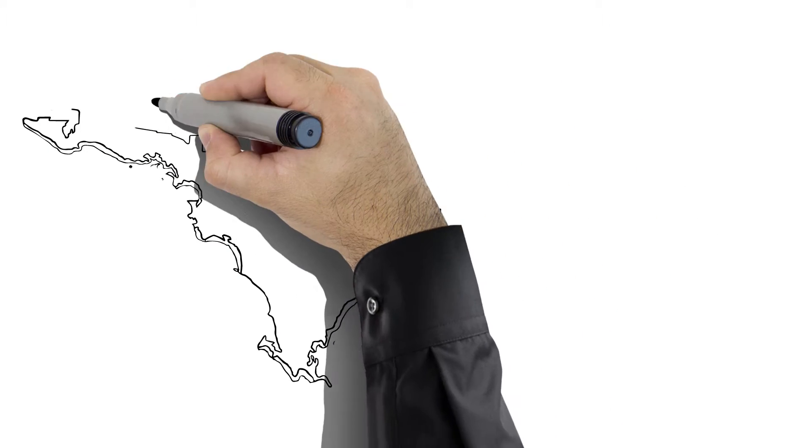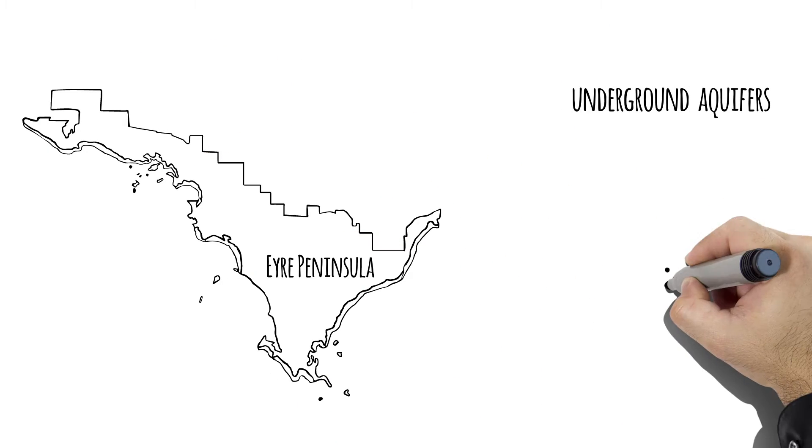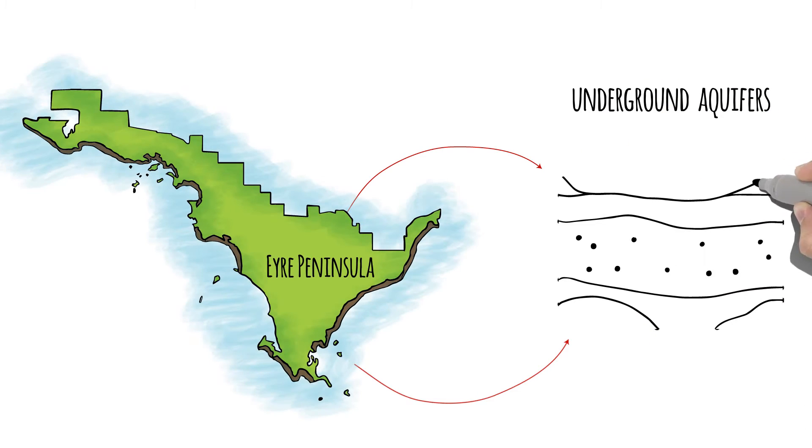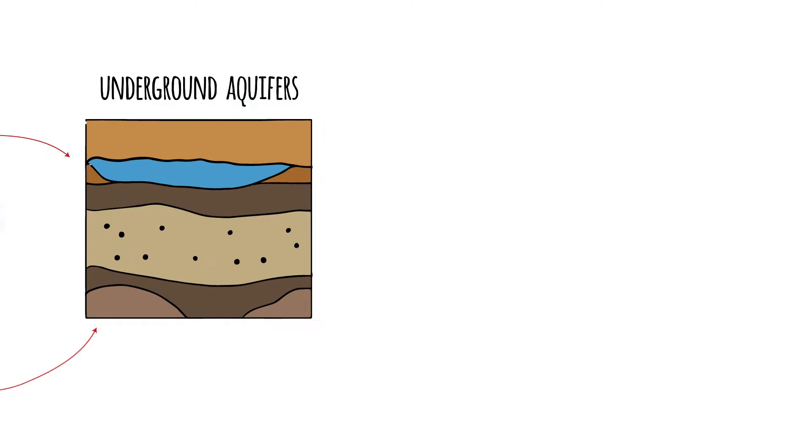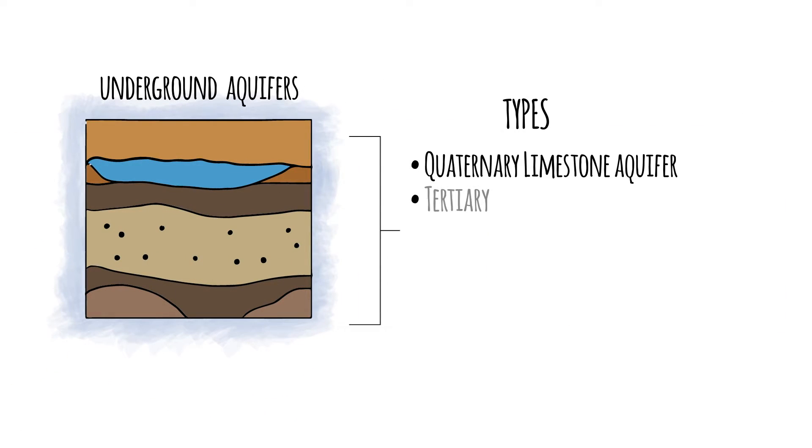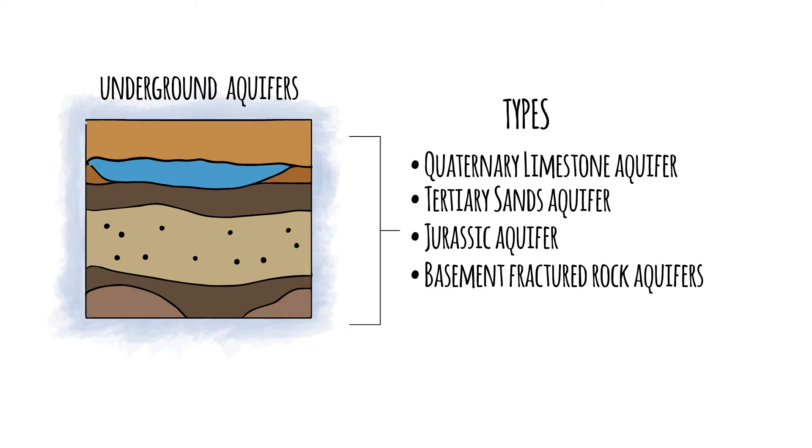In the southern basins and Musgrave prescribed wells areas, groundwater is found underground in a series of aquifers which are water bearing rocks and sediments. These include the Quaternary Limestone Aquifer, the Tertiary Sands Aquifer, the Jurassic Aquifer and the Basement Fractured Rock Aquifers.